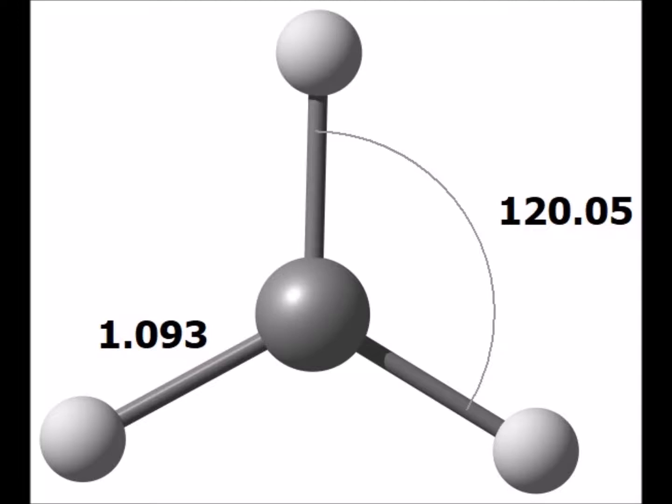The methyl carbocation has perfect D3H symmetry. In other words, it has the same symmetry as an equilateral triangle, and within the limits of the calculation, each of the bond angles is the perfect 120 degrees that we'd expect for sp2 hybridized carbon.